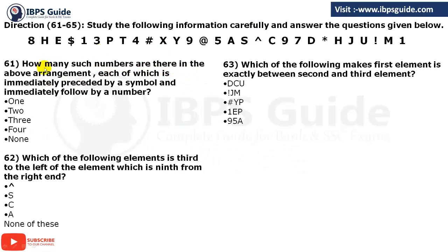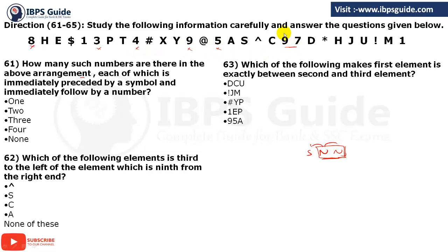Question 61: How many such numbers are there in the arrangement where each number is immediately preceded by a symbol and immediately followed by a number? We need to find numbers where before it is a symbol and after it is a number, so no two numbers are consecutive. Going through the arrangement, there is no number which is immediately preceded by a symbol and immediately followed by a number. So our answer is none.